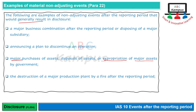The destruction of a major production plant by fire after the reporting period۔ Business میں چھوٹے موٹے damages اور losses ہوتے رہتے ہیں، ان کا disclosure دینے کی ضرورت نہیں۔ لیکن اگر کوئی major destruction ہو جائے — by fire یا by flood — تو وہ آپ کا material item ہو گا۔